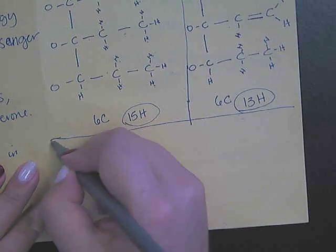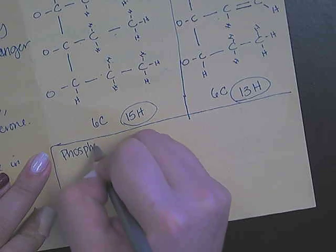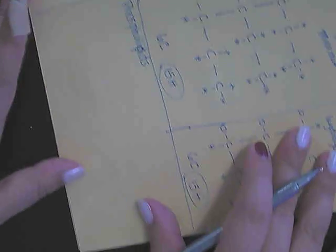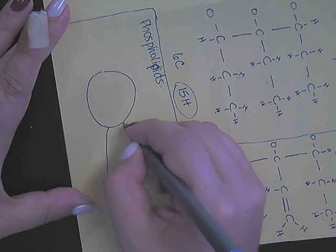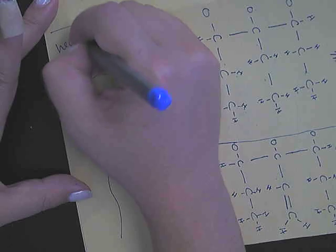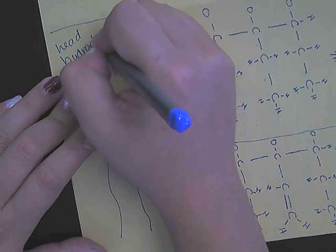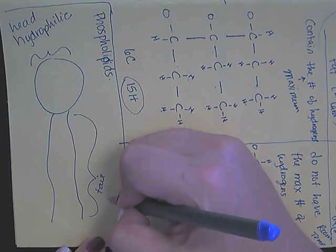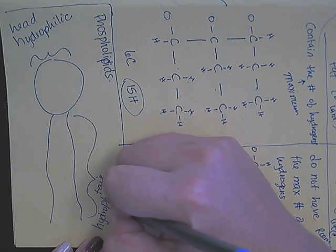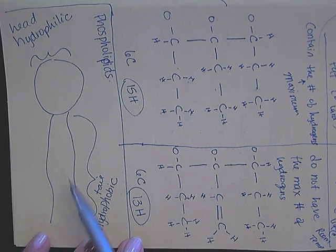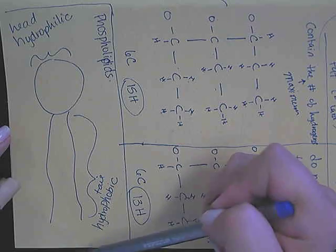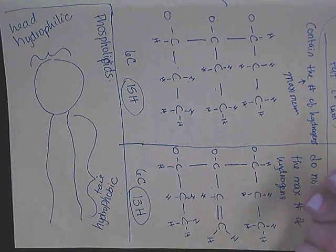That was example number one of how the structure of lipids affects their function. The other example I want to go over is phospholipids. Your phospholipids have a head and two tails. The head region is what we call hydrophilic and the tail region is what we call hydrophobic. The tails themselves can also be described as saturated and unsaturated. The molecules that make up the head versus the tail affect how these phospholipids function within the plasma membrane.